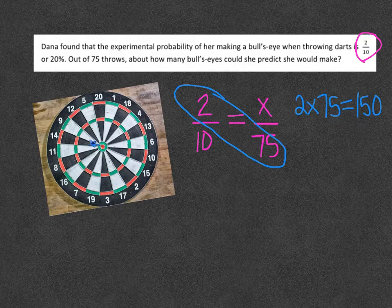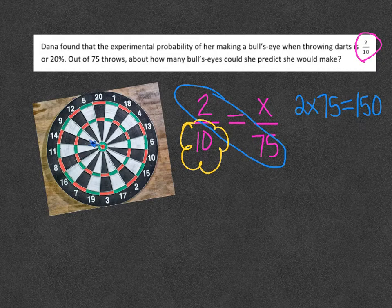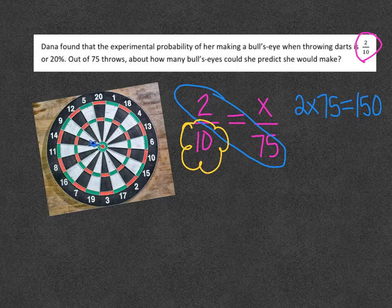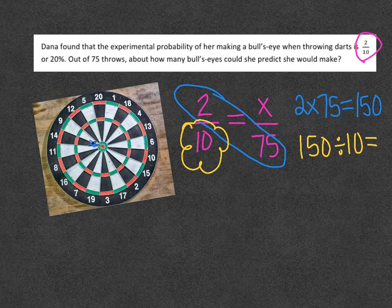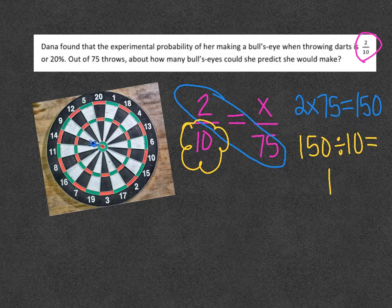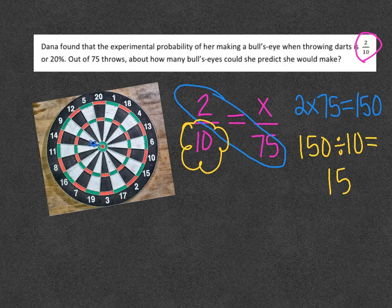And then I need to try and figure out what number I would times with ten to get 150. If you know that, awesome. If not, then you would divide 150 by ten and the answer would be how many shots she would make. That would be the amount of bullseyes she would make.